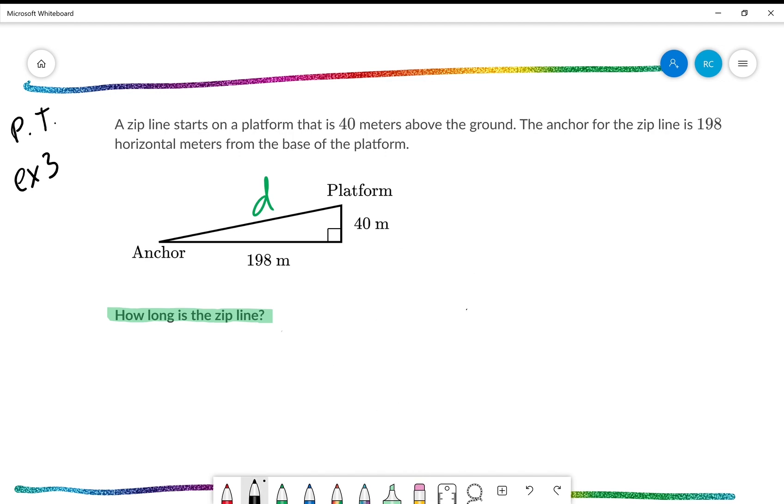So I'm going to go ahead and set up and solve the Pythagorean theorem very quickly here. I assume by this point you're all beginning to get this. So I'm going to go ahead and just speed through this problem. So we get that the zip line is 202 meters long.